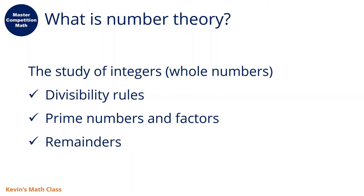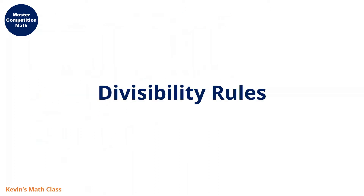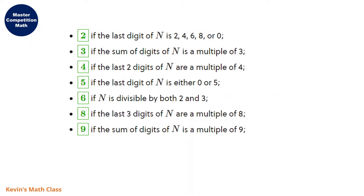First, divisibility rules. Second, prime numbers and factors. And lastly, we have remainders. Today, we talk about divisibility rules first. I think many of you might be familiar with some divisibility rules. Let me list all of the divisibility rules from two to nine. So let's take a look.